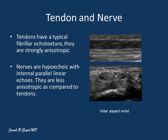The tendons have a typical fibrillar echotexture and they are strongly anisotropic. On the other hand, the nerves are hypoechoic as compared to the tendons, but they have internal parallel linear echoes and they are less anisotropic as compared to the tendons.